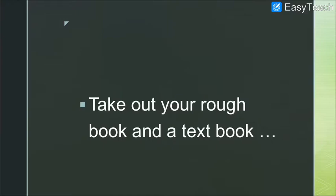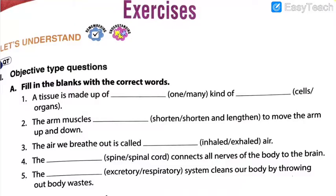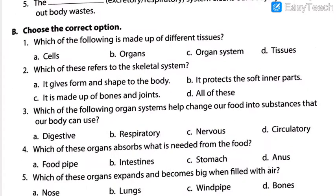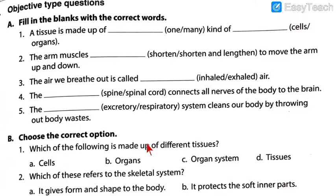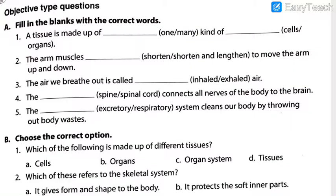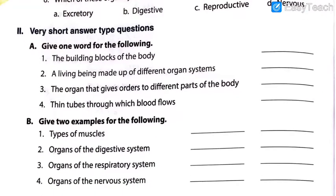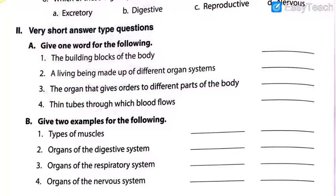If you have the textbook, be ready with page number 94. Those who do not have the textbook will have to write only the answers in proper sequence with the proper answer number in their rough book. If you can see on the screen, this is what we have done in the previous lecture — exercises where we did question 1, sub-questions A and B. Now on page number 94, we are going to start solving question 2: very short answer type questions.